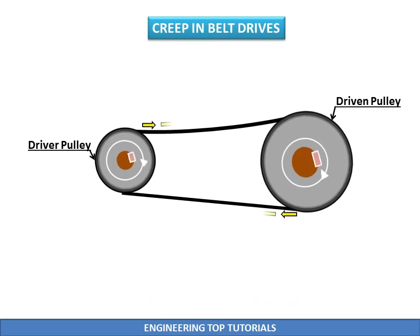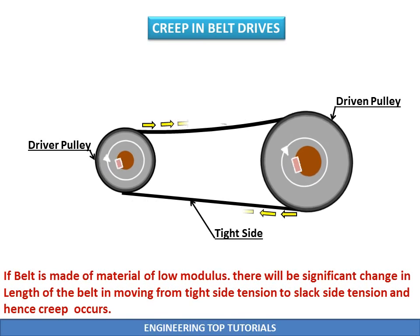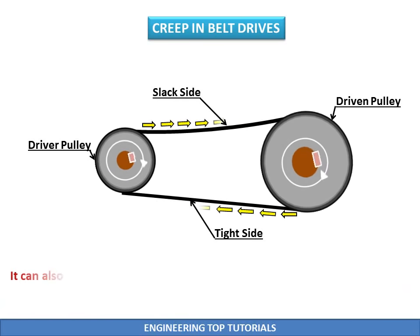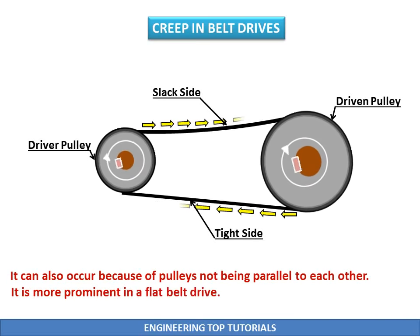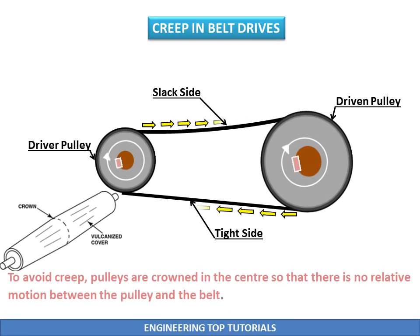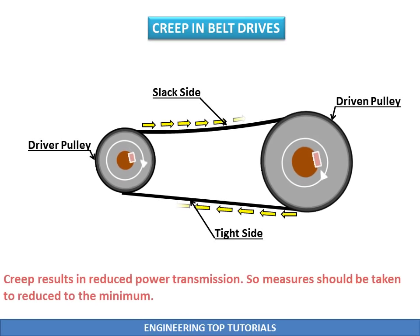Creep in belt drives: If the belt is made of a material with a low modulus, there will be a significant change in the length of the belt when moving from tight side tension to the slack side tension, and hence creep occurs. It can also occur because the pulleys are not parallel to each other. Creep is more prominent in flat belt drives. To avoid creep, pulleys must be crowned in the center so that there is no relative motion between the pulley and belt. Creep results in reduced power transmission, and various measures should be taken to minimize it.